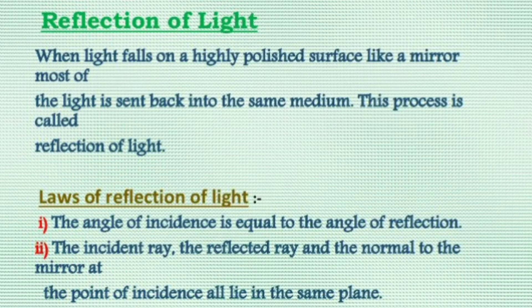Hello students, we are going to define reflection of light. Reflection of light is the bouncing back of light in the same medium after striking a surface. When light falls on a highly polished surface like a mirror, most of the light is sent back into the same medium. This process is called reflection of light.